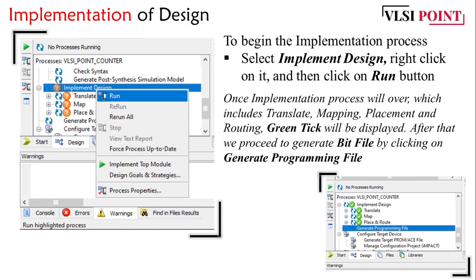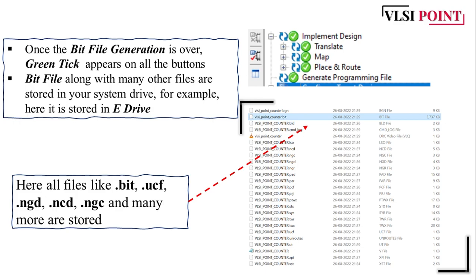Now it is time to implement the design. Right click on 'Implement Design' and click run. Once the implementation process completes — which includes translate, mapping, placement, and routing — you will get a green check mark. Then proceed to generate the .bit file by clicking on 'Generate Programming File'. Right click on that option and run the process and your bit file will be generated.